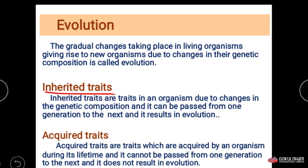Inherited traits are those which arise due to change in genetic composition and pass from one generation to another, resulting in evolution. Acquired traits are traits acquired by the organism during its lifetime and cannot be passed from one generation to the next, and do not result in evolution.